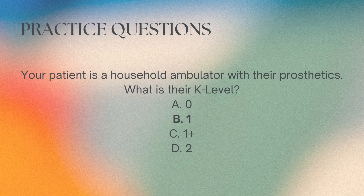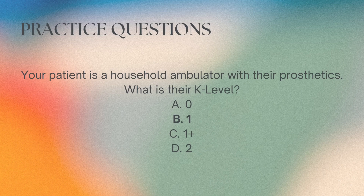The correct answer is B. The question: your patient is a household ambulator with their prosthetic — what is their K-level? K-levels start with zero, where the prosthetic will not enhance quality of life, then one is household ambulator, two is limited community ambulator, three is unlimited community ambulator, and four exceeds basic ambulation skills. You should immediately mark off C because there is no one-plus in the K-level scale — one-plus is used in the modified Ashworth scale.